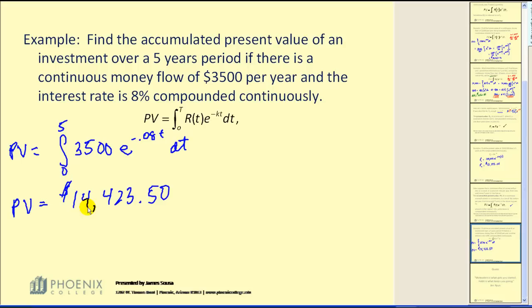Again, what this means is if I make a one-time deposit today and leave it alone for five years in this account that pays 8% continuous interest, I would have the same balance as if I put $3,500 in the account per year for five years. Notice this does not tell us what that balance would be in the future. We'd have to calculate the future value to find that.